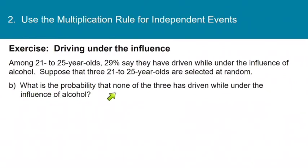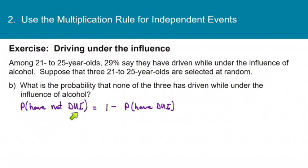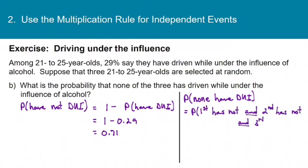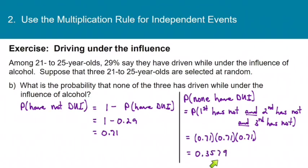Now, what is the probability that none of the three has driven while under the influence? We need the probability that each one has not driven under the influence — the complement of 0.29, which is 1 − 0.29 = 0.71. So the probability that none of the three has driven under the influence is 0.71 × 0.71 × 0.71 ≈ 0.3579, or 35.79%.